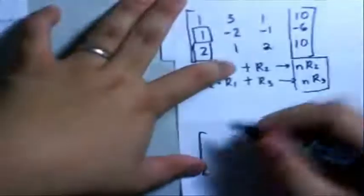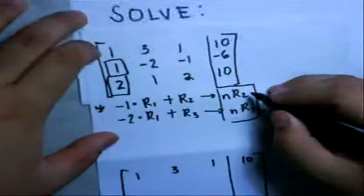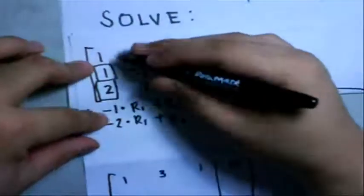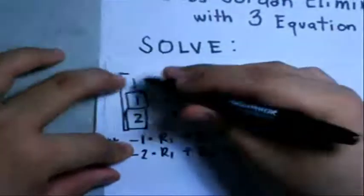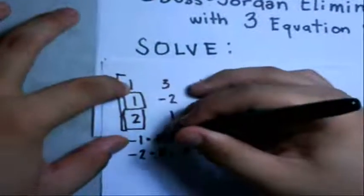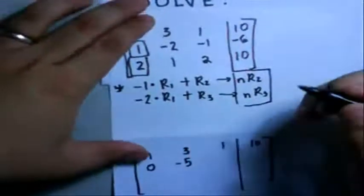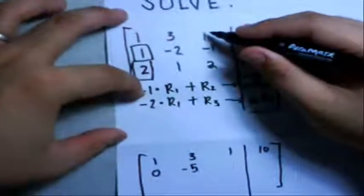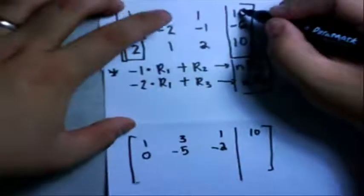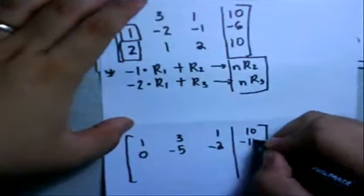We copy Row 1: 1, 3, 1, 10. Then we use the formula to get the new Row 2. Negative 1 times Row 1 applied element by element, then added to Row 2. The last element: negative 1 times 10 plus negative 6 gives us negative 16. So we're done with Row 2.